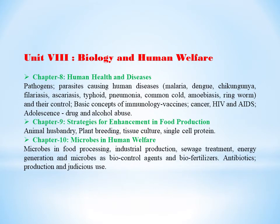Under Unit 8, that is biology and human welfare, it comprises again of three chapters. Chapter 8, human health and diseases. Here we're learning about pathogens, what are parasites causing diseases, then the basic concept of immunology, about vaccines, cancer, HIV/AIDS, adolescence, drugs and alcohol abuse.